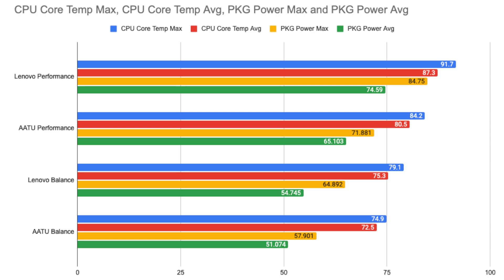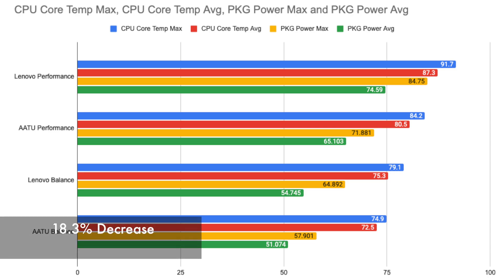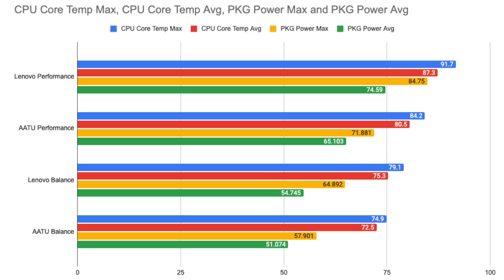Starting at the top, the Lenovo in Performance mode has the highest max CPU core temp at 91.7°C, AATU Performance at 84.2°C, Lenovo Balance mode at 79.1°C, and lastly AATU Balance mode at 74.9°C, which comes to an 18.3% decrease. Average core temp starts with Lenovo Performance mode at 87.3°C and ends with AATU in Balance mode at 72.5°C, resulting in a 16.9% decrease in temperature.